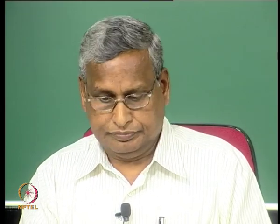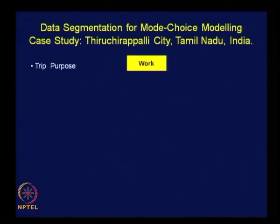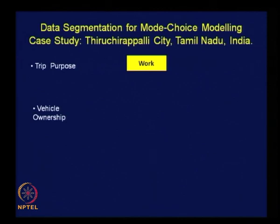The moral of the story is that we need a homogeneous data set for mode choice modeling. Homogeneity can be achieved by segregating data based on trip purpose, based on socio-economic characteristics of travelers, and based on the choice set — the number of choices available for travel. These were the approaches adopted for modeling mode choice in this particular case study. The trips were segregated based on trip purpose, and we want to model mode choice for work trips. Vehicle ownership was introduced as a proxy for economic status of the traveler.